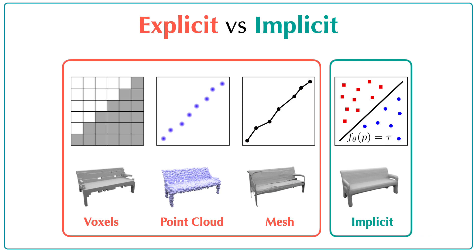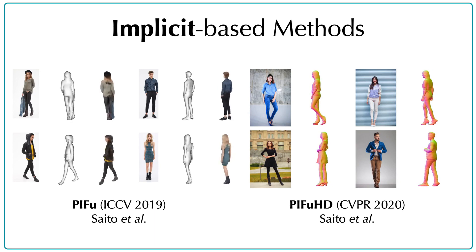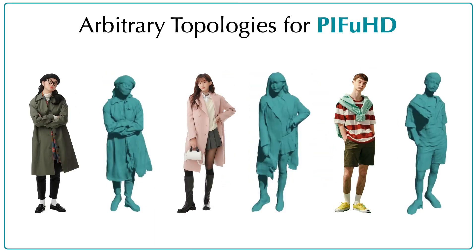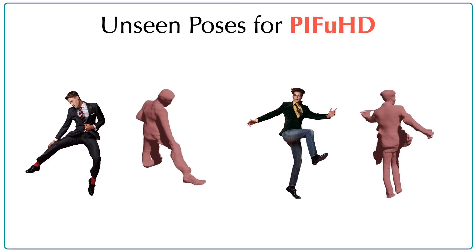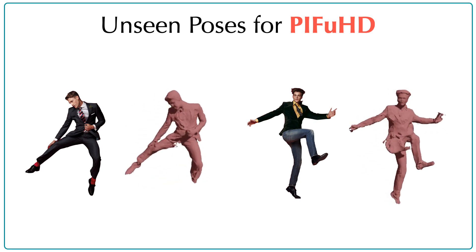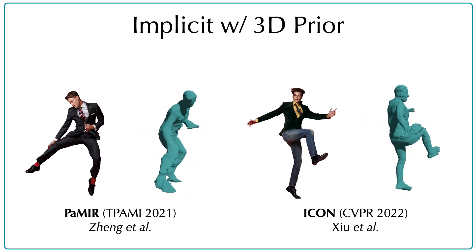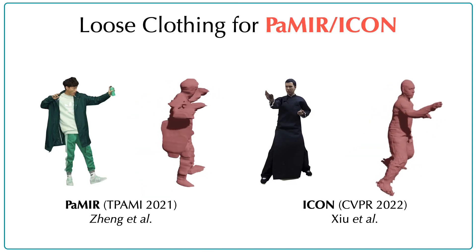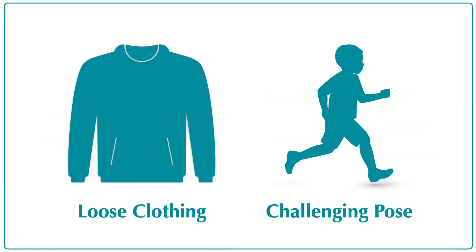Existing methods can be grouped into two categories: explicit shape-based and implicit-based approaches. Explicit shape-based approaches struggle with clothing that deviates significantly from the underlying body. Implicit-based approaches, like PIFu, introduce pixel-aligned implicit functions, which are able to model geometric details and generalize to arbitrary topologies. However, they often produce degenerate shapes for poses not present during training. Robustness to extreme poses can be achieved by introducing a 3D body prior, as in ICON, but this reduces topological flexibility, causing artifacts for loose clothing. What we want is a reconstruction algorithm that can generalize to loose clothing and is robust to challenging poses.